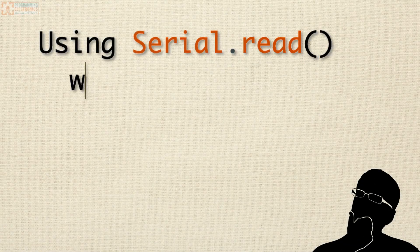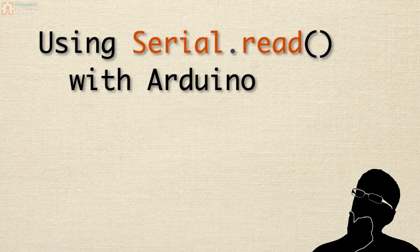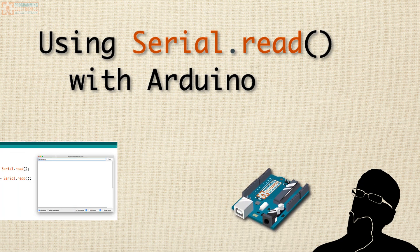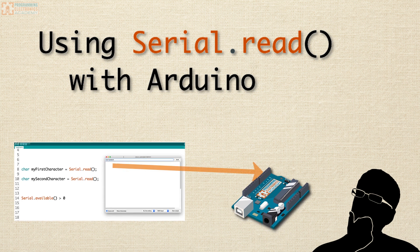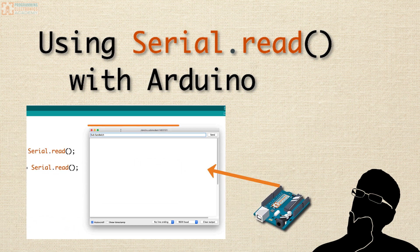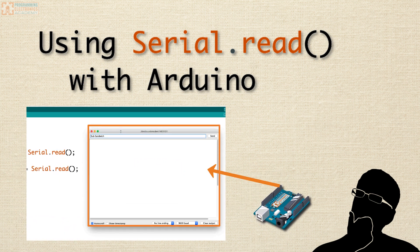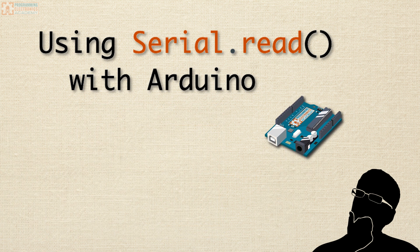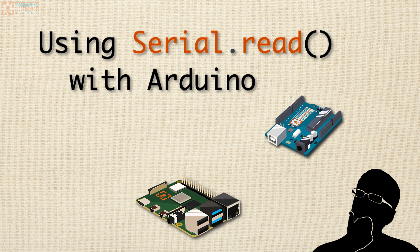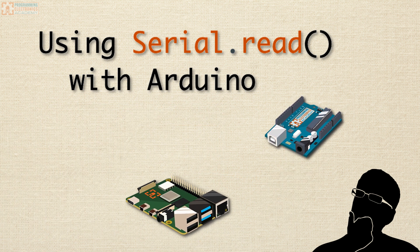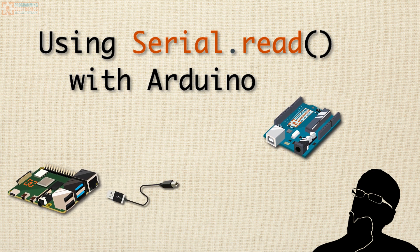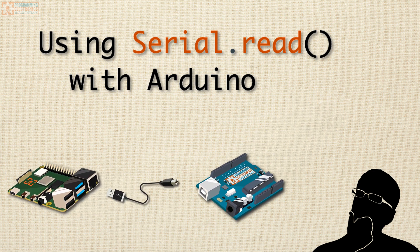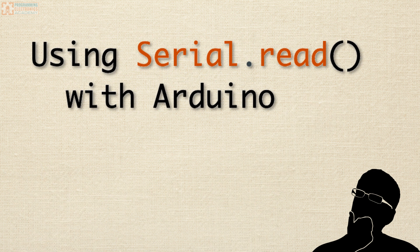Are you trying to use Serial Read to get data from a serial port to your Arduino? Maybe you're using the Arduino Serial Monitor window and sending in data. Or maybe you've got a program running on your Raspberry Pi that's sending data via serial to your Arduino board. How do you use Serial Read to receive the data and piece it together correctly?